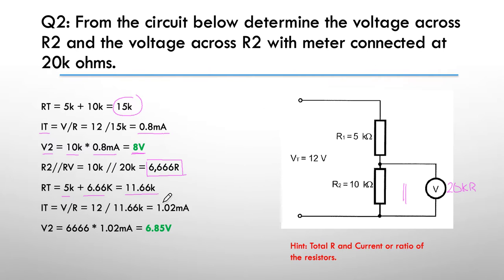I then worked out the new current, which would be 12 divided by 11.66 giving me 1.02 milliamps now flowing through the circuit. And then I worked out the voltage giving me 6.85 volts across R2 in parallel with the meter at 20k.